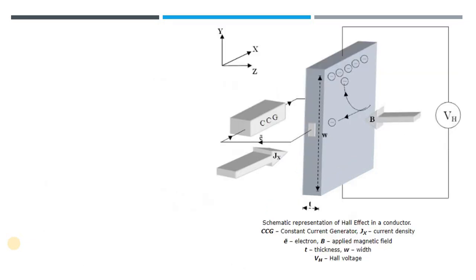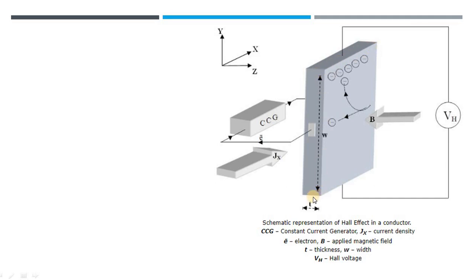To understand this phenomenon in further detail, let us start with a slab of a semiconducting material which has three dimensions in the three directions x, y and z. This is your x-axis — this length is the dimension of the slab along x direction. This is your y-axis, this is your y-dimension, and this is the z-axis, the z-dimension. This slab has a total volume V with three dimensions L, W and T.